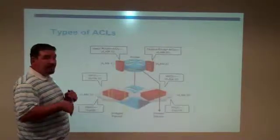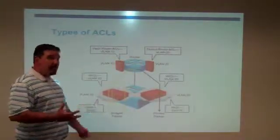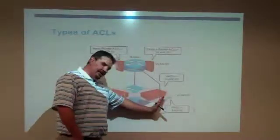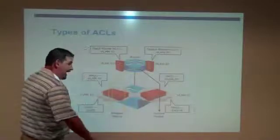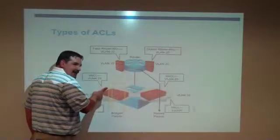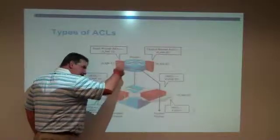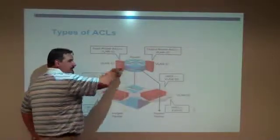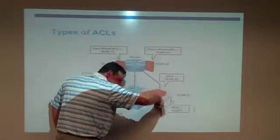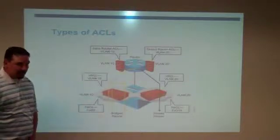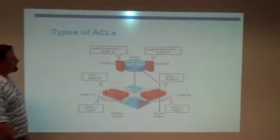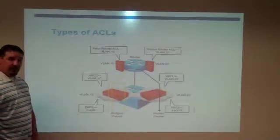So we have the potential on a 6500, if you really wish, to go through multiple access lists as we're going from one interface to another interface on the same switch. I may have an inbound port-based access list, I might have an inbound VLAN access list, I may have an inbound routed access list, and an outbound routed access list, and an inbound VLAN access list, and then an outbound port access list. So the potential is there to potentially have 6 different access lists that we have to go through as far as filtering is concerned.